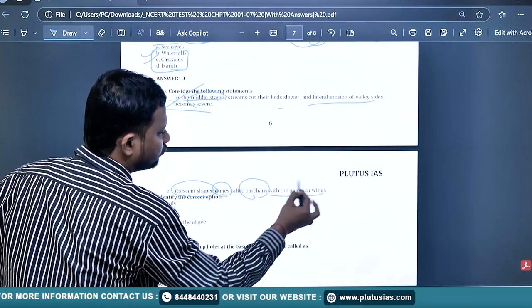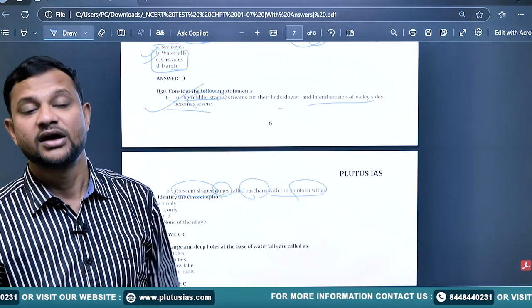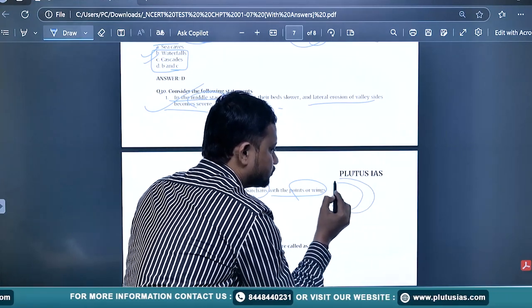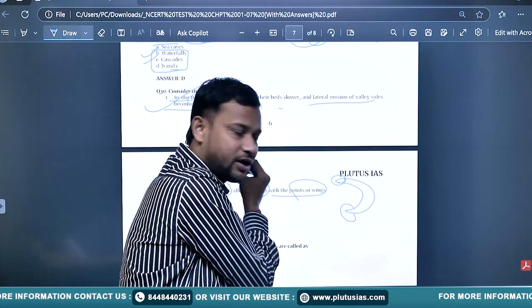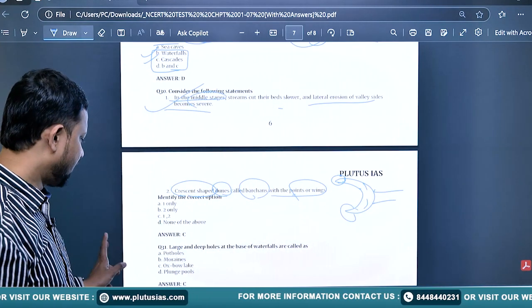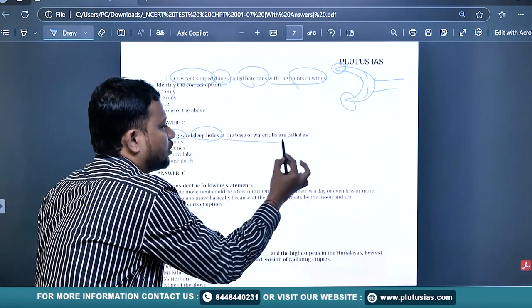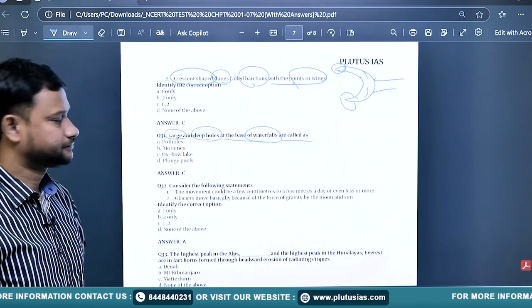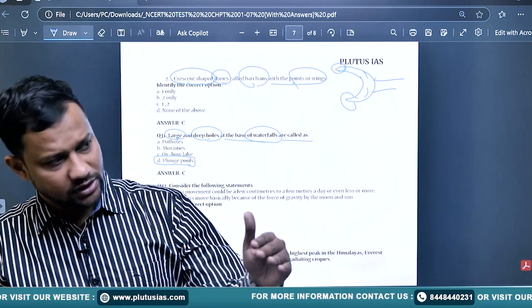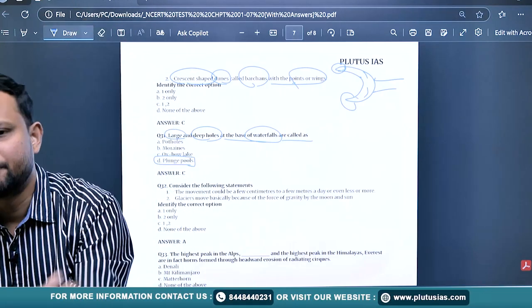The crescent-shaped dunes called barchans, with points or wings, you will find in the desert led by wind. These are the result of depositional processes. The two wings form through deposition, and accordingly barchans develop. Large and deep holes at the base of waterfalls are called plunge pools. Plunge pools are formed usually in the course of waterfalls. Excessive burden leads to plunge pool formation - that is an erosional landform.